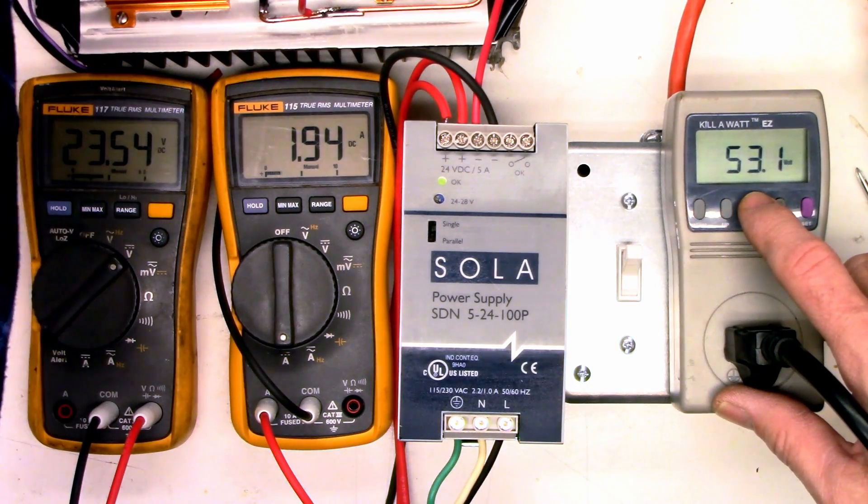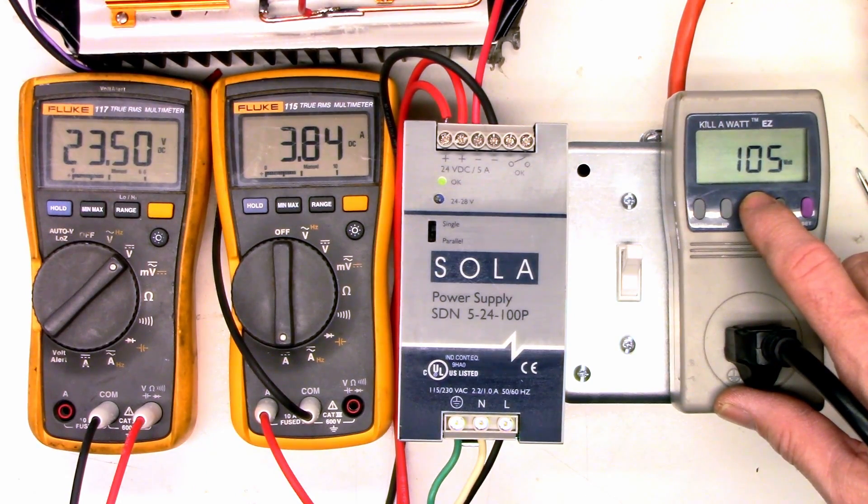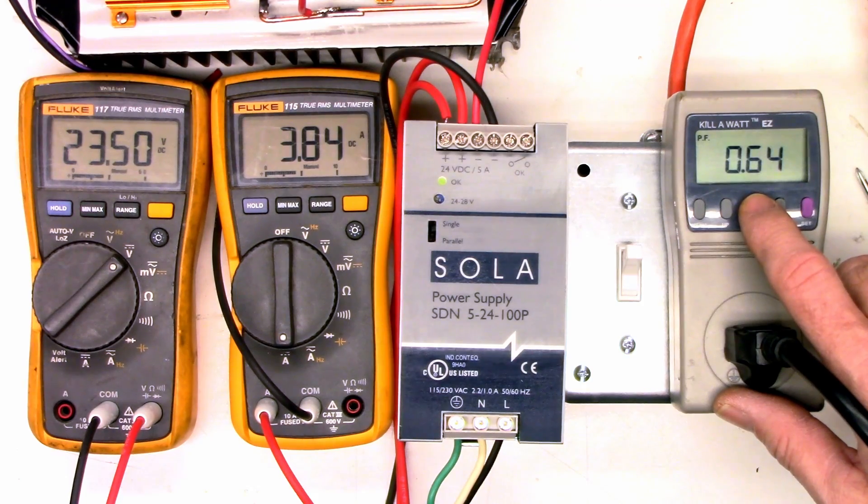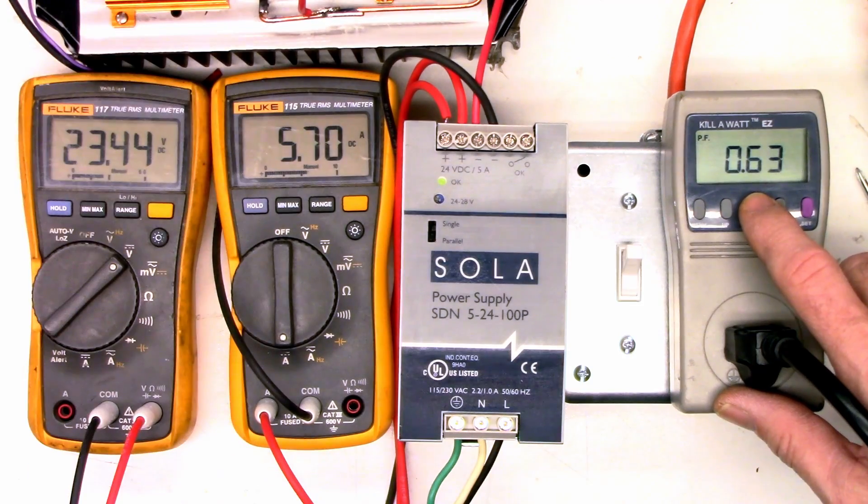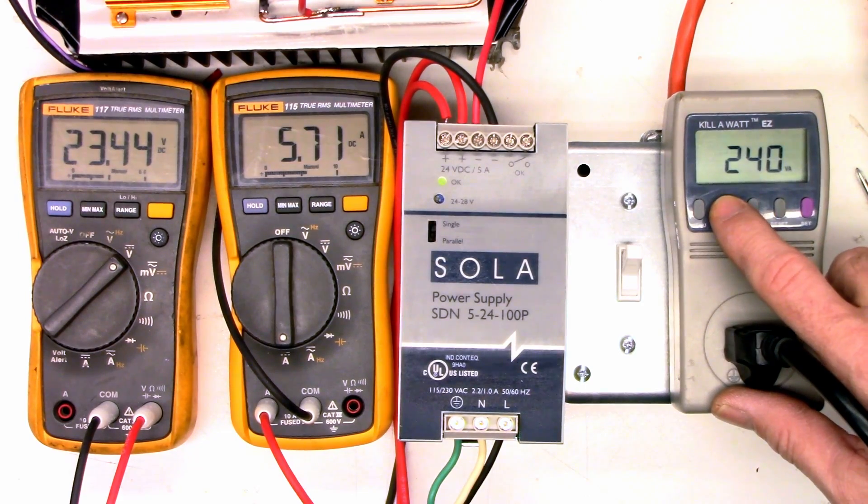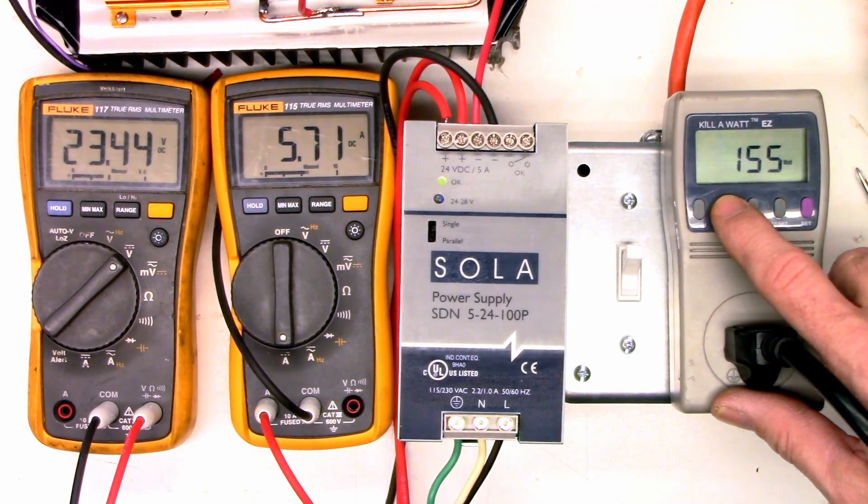Let's turn on the next load. 3.8 amps now. We're up to 105 watts and 161 VA, and our power factor now is 0.64. Seems pretty constant. Next load, 5.7 amps. Power factor went to 0.65 now. Our VA is now 240, and our watts is now 155.